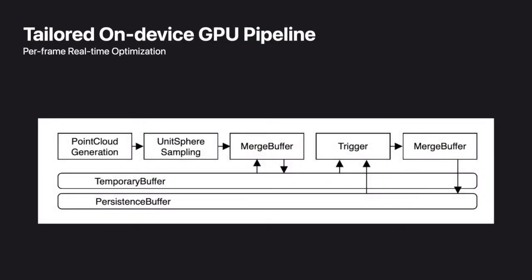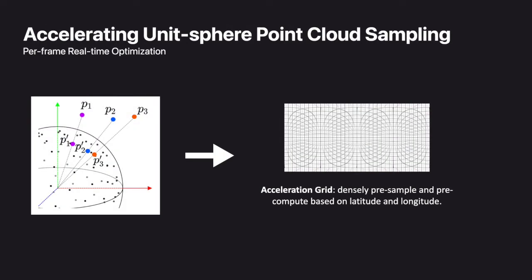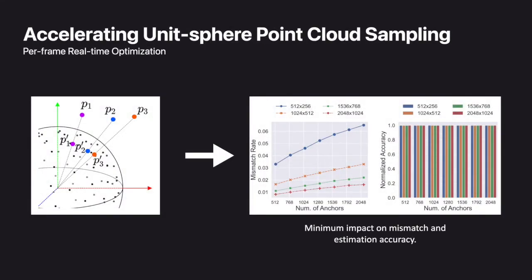To maximize computation performance, we developed a tailored on-device GPU pipeline to support most on-device computation in our system. Notably, for unisphere point cloud sampling, we replaced the time-consuming nearest neighbor searching with an acceleration grid evaluation process, which requires only one memory access time. Our evaluation shows using the acceleration grid has negligible impacts on mismatching and estimation accuracy, showing negligible precision impact in terms of mismatching percentage and normalized accuracy.